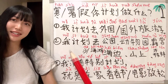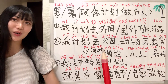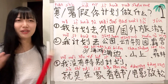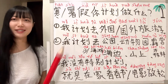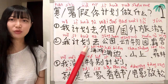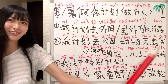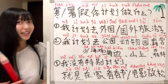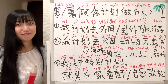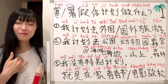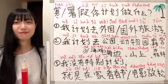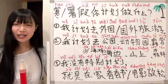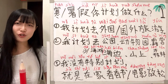So the pattern 'I plan to go somewhere' is: 我计划去 [location]. For me, basically I don't have special plans.